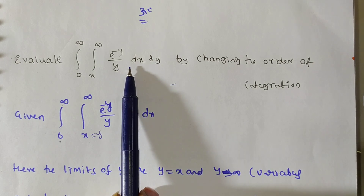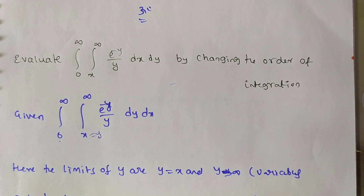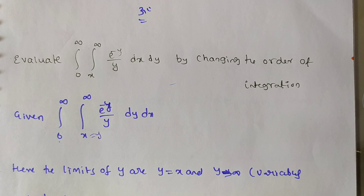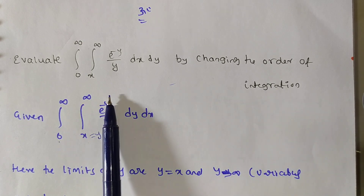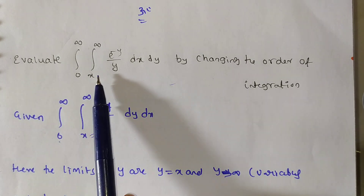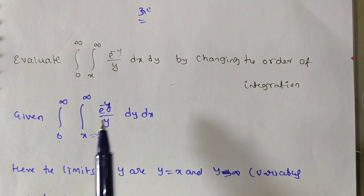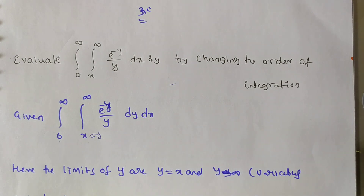So we cannot apply the integration directly; that is why we are changing the order of integration. Sometimes they may also mention changing the variables, but in this case we are just changing the order of integration. The problem is: integral from 0 to infinity, x to infinity of e^(−y)/y · dy dx.